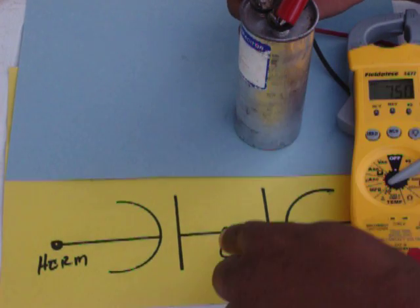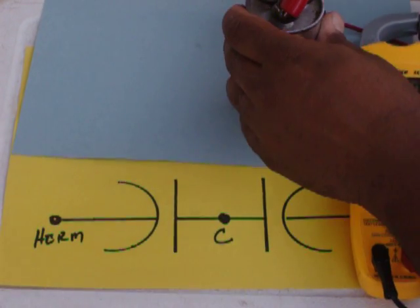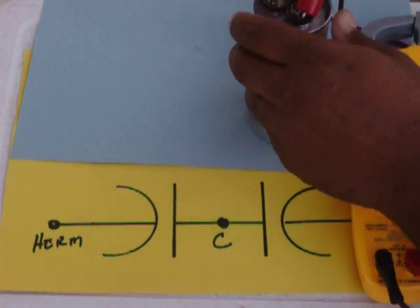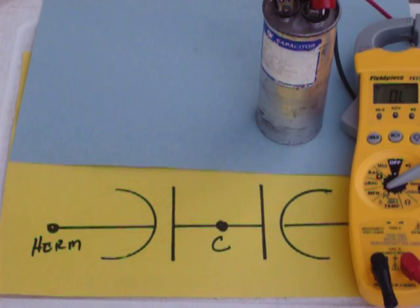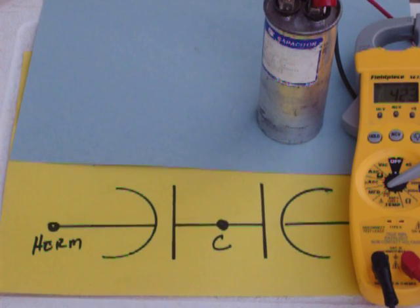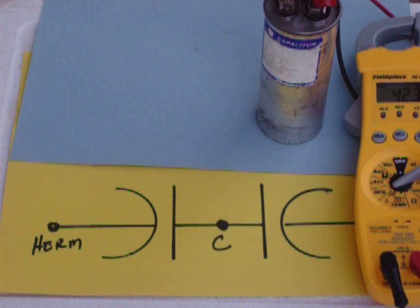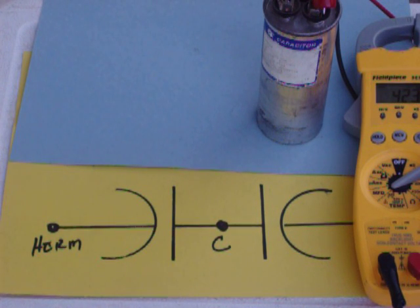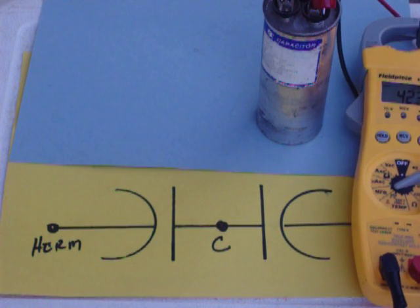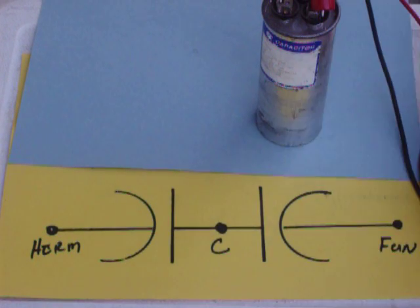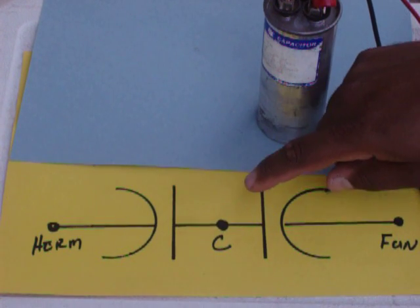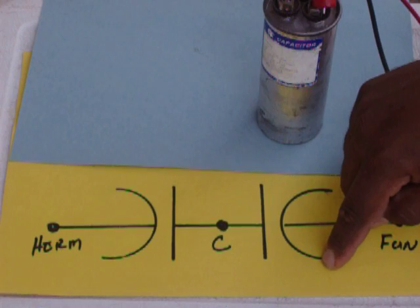So now I'm going to leave it on common and I'm going to check to hermetic. And we should get that 45. 42.3. You can go plus or minus 10%. 10% of 45 is 0.45. 45 minus 0.45 is 0.41. So we are within range.